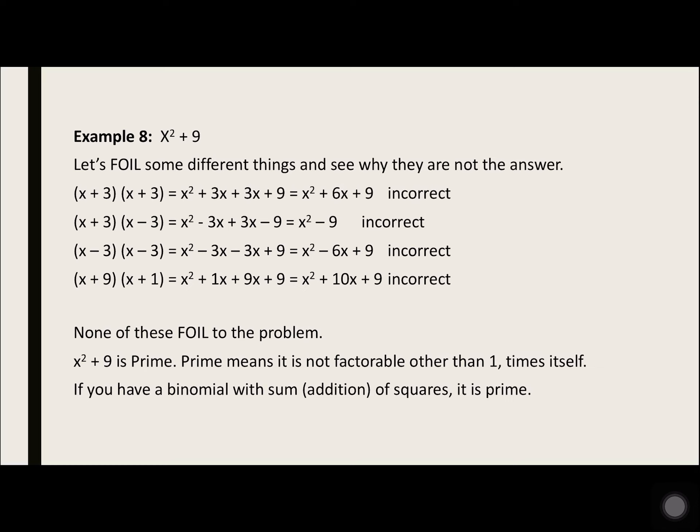Example 8: x squared plus 9. Let's FOIL some different things and see why they are not the answer. x plus 3 times x plus 3: x squared plus 3x plus 3x plus 9 gives x squared plus 6x plus 9 — that's not correct. x plus 3 times x minus 3 gives x squared minus 3x plus 3x minus 9, which has minus 9 — not correct. x minus 3 times x minus 3 gives x squared minus 3x minus 3x plus 9, so minus 6x — not correct either.